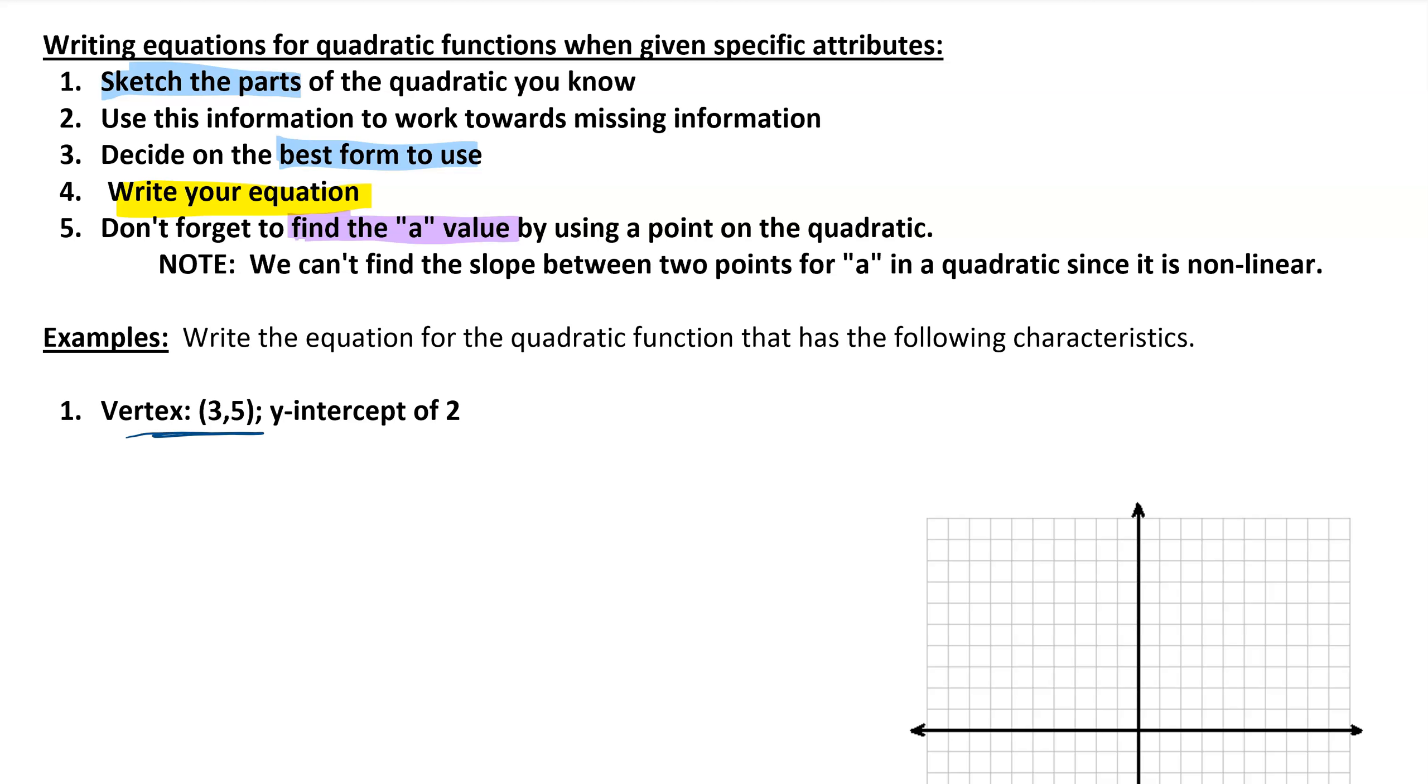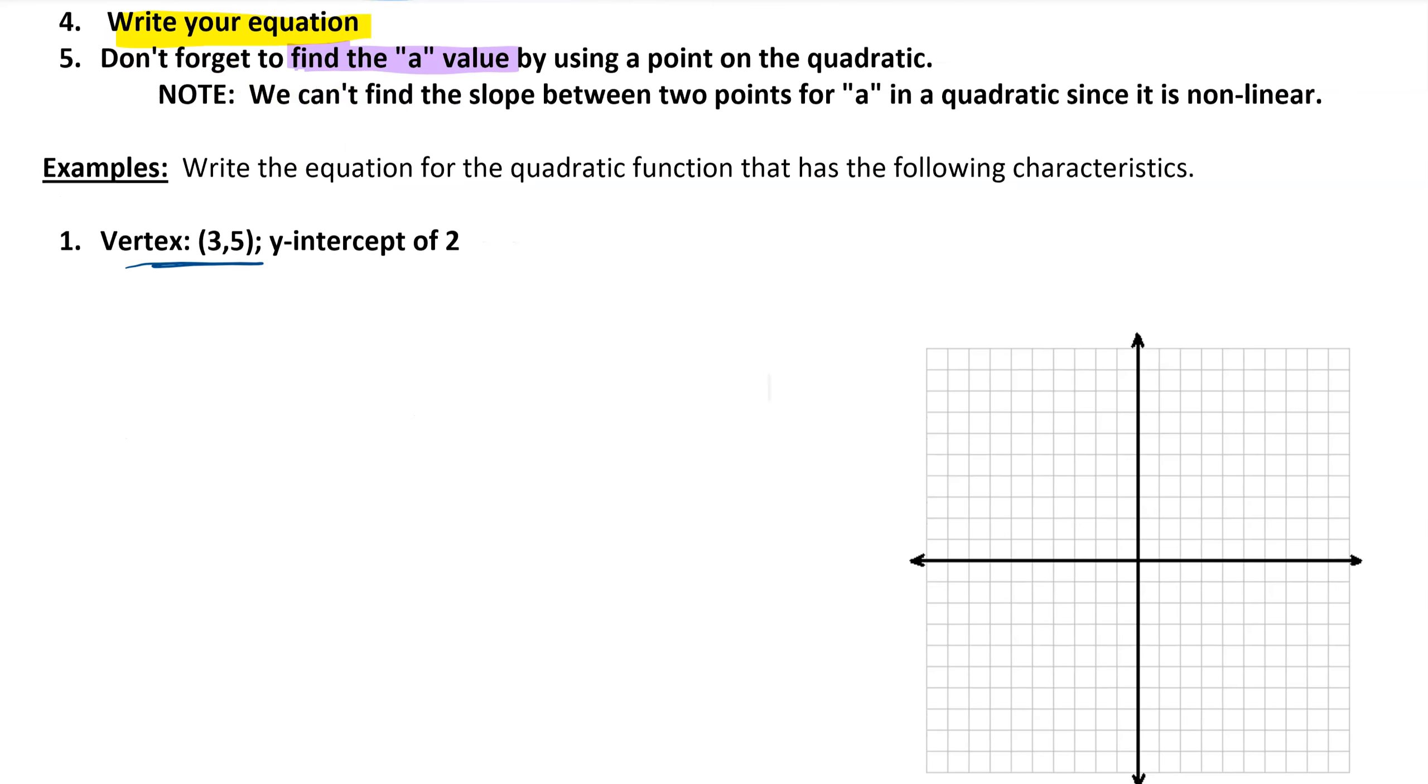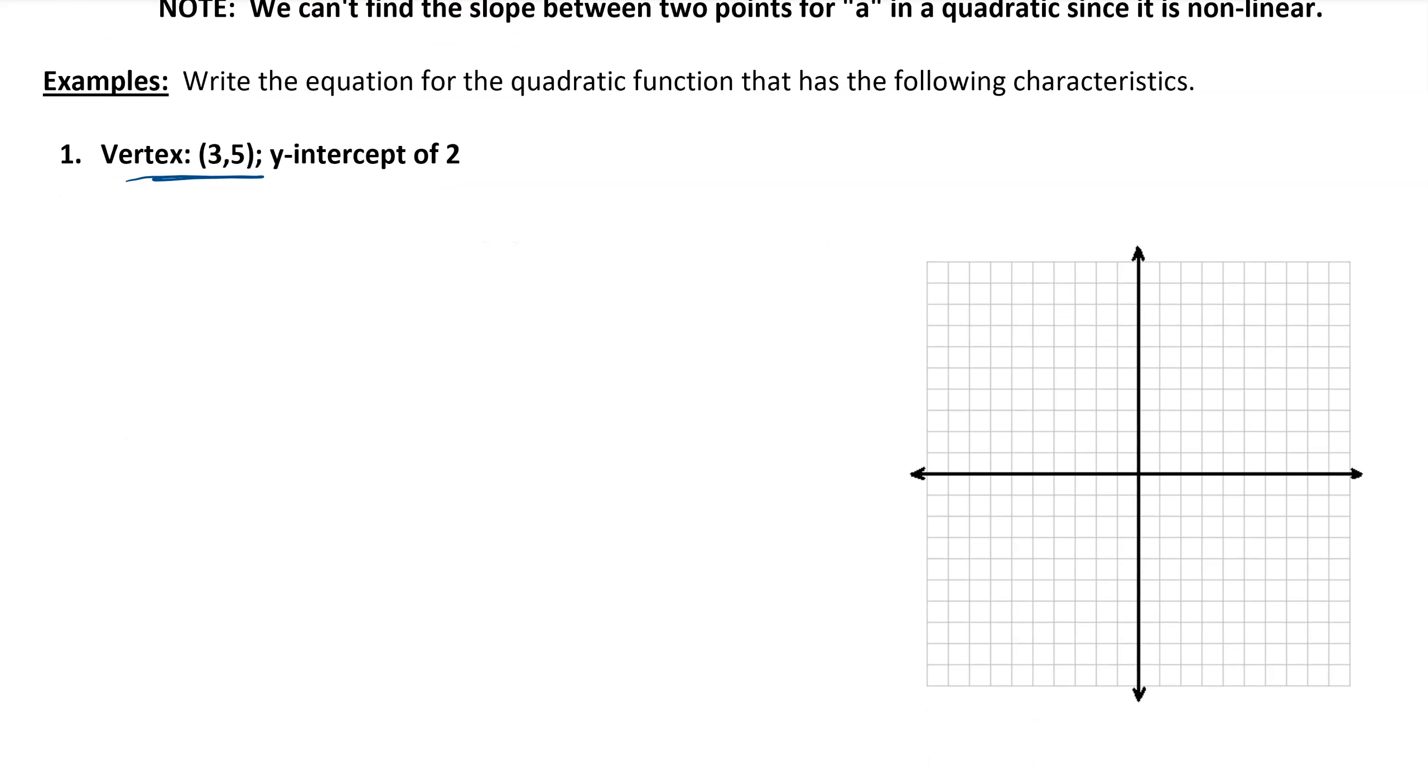In this first example, we're given information about the vertex and also the y-intercept, so that tells us about a second point on the graph. The fact that we're given information about the vertex signals that vertex form is probably going to be the most useful.